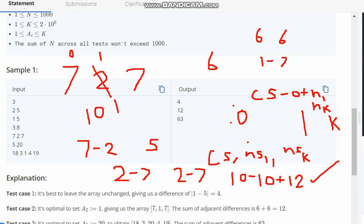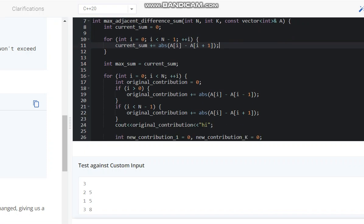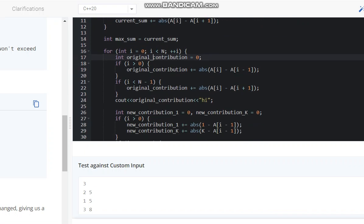First we are calculating the current sum, which is the total sum of the elements at original level. Then we define maximum sum as the current sum. We take the original contribution as 0 and calculate for each of the elements.